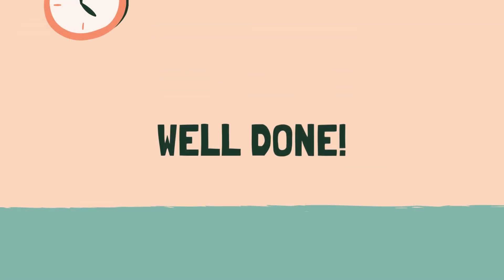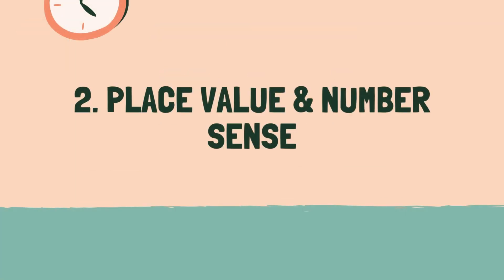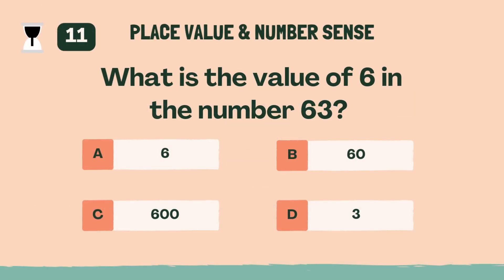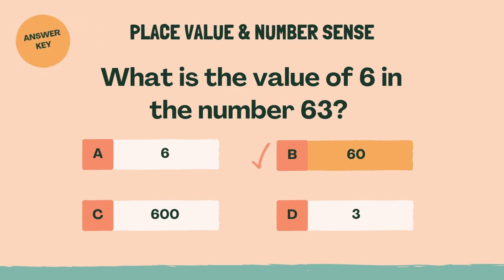Well done. Let's move on to the next category. Category 2: Place Value and Number Sense. What is the value of 6 in the number 63? The answer is B, 60.